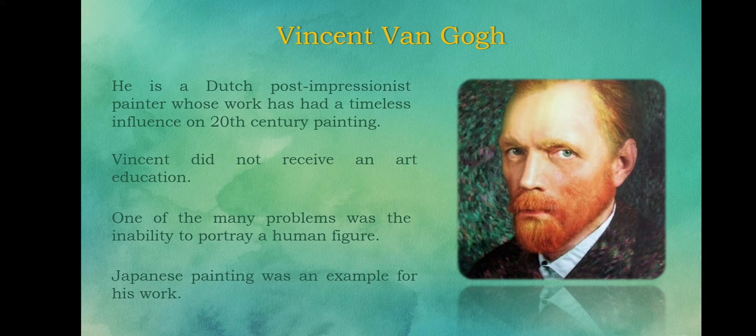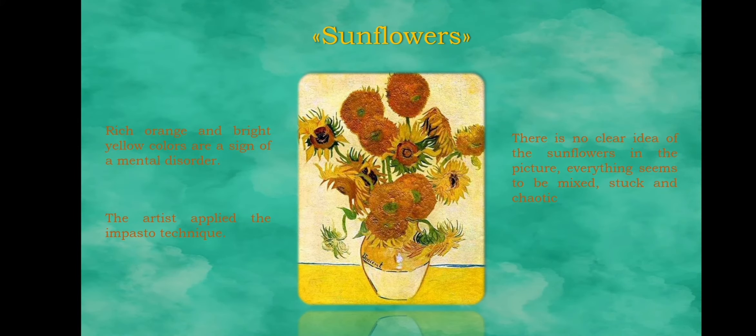Vincent van Gogh died in 1890 after shooting himself with a revolver. The painting of flowers is filled with color and life. Rich orange and bright yellow colors are a reflection of his mental state. Many paintings by this artist indicate this.